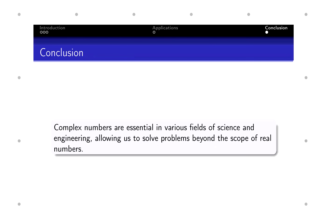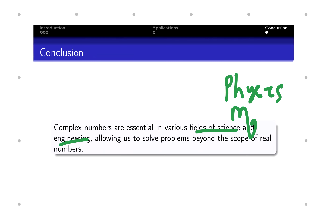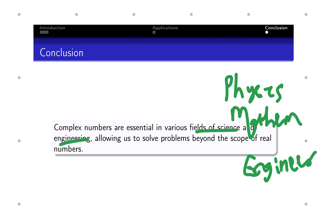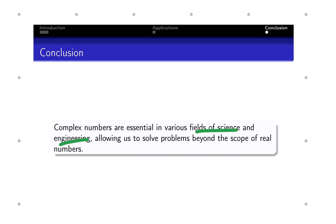In conclusion, complex numbers are essential in various fields of science and engineering, allowing us to solve problems beyond the scope of real numbers. You see them in physics, mathematics, electrical engineering, fluid dynamics, and more. Thank you for listening to this video. See you in the next one — make sure you subscribe to this channel to follow this course, and hit the notification bell so you always get alerted when a new video is released.